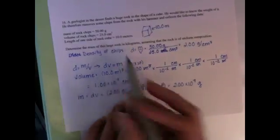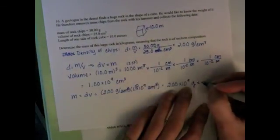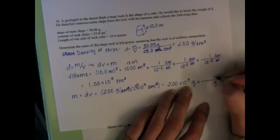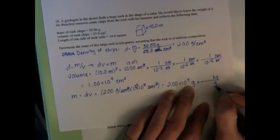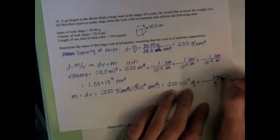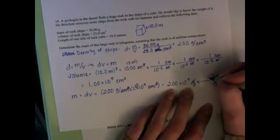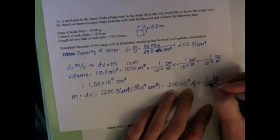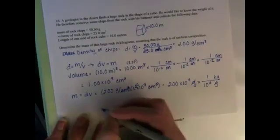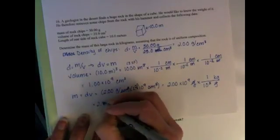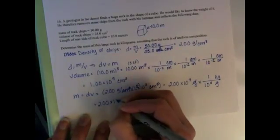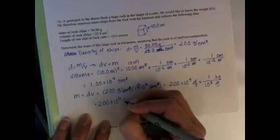The problem wants us to give the answer in kilograms. So we'll need to do one more conversion, grams to kilograms. Putting grams on the bottom so they cancel, kilograms on top. The prefix kilo means 10 to the 3rd. So this is going to be 2 times 10 to the 6th kilograms.